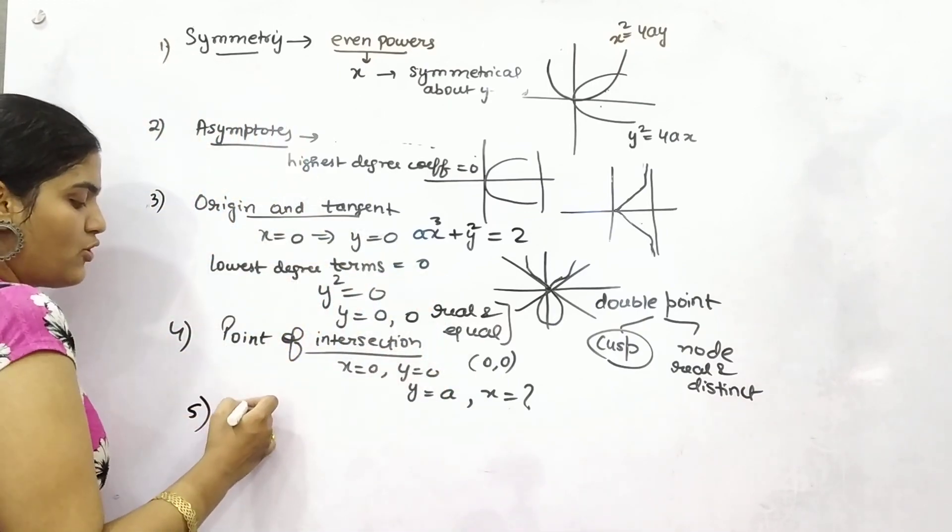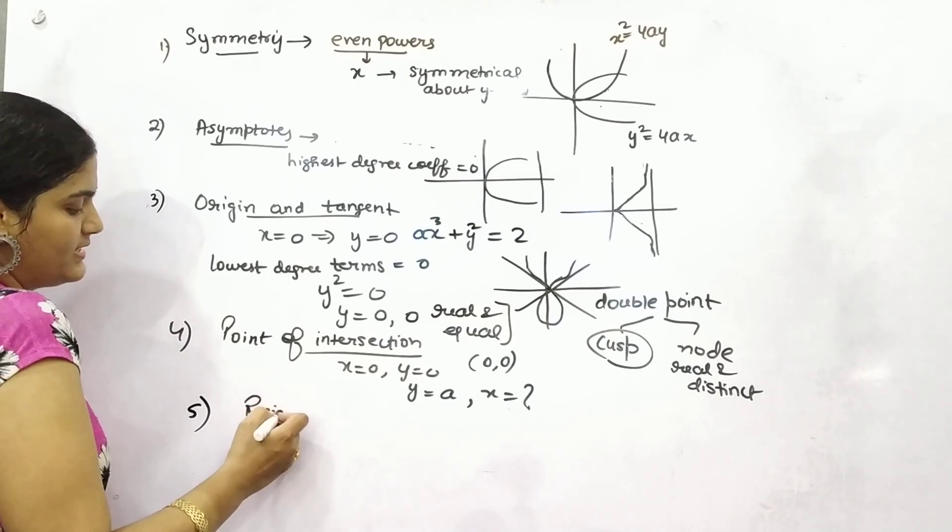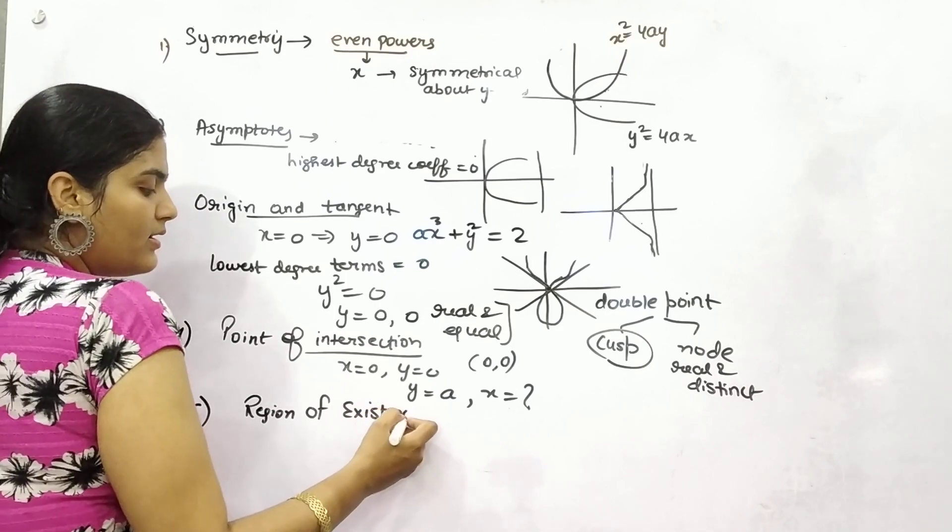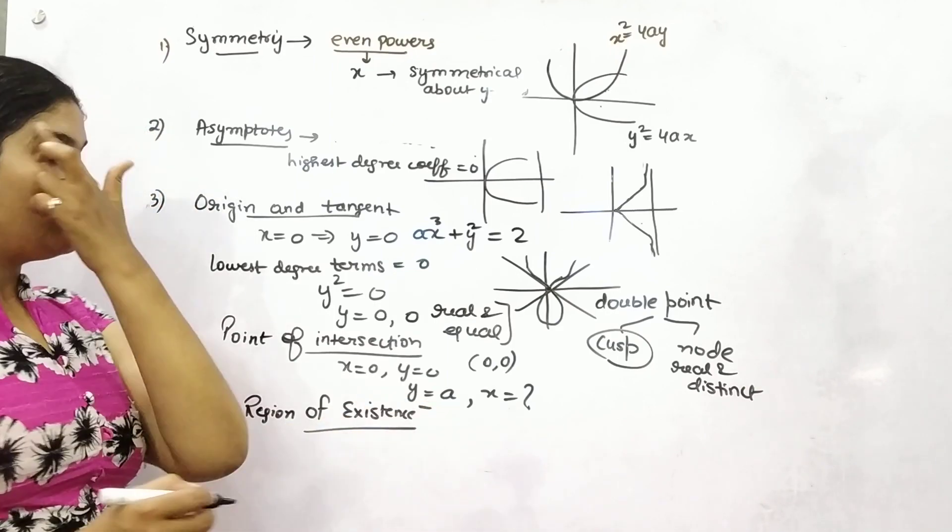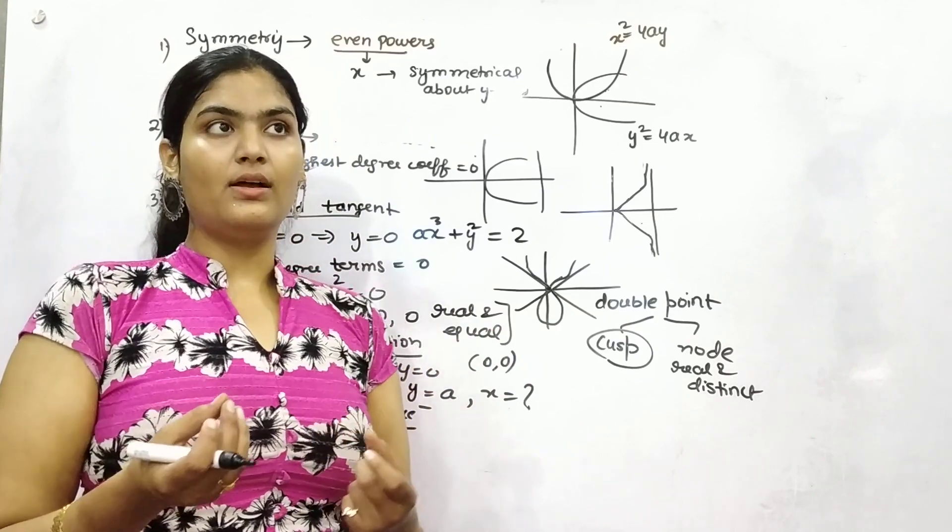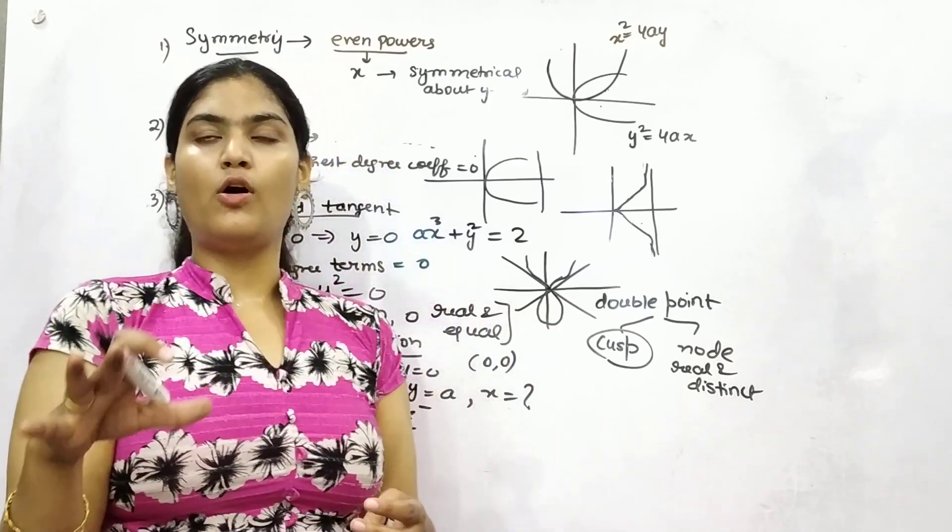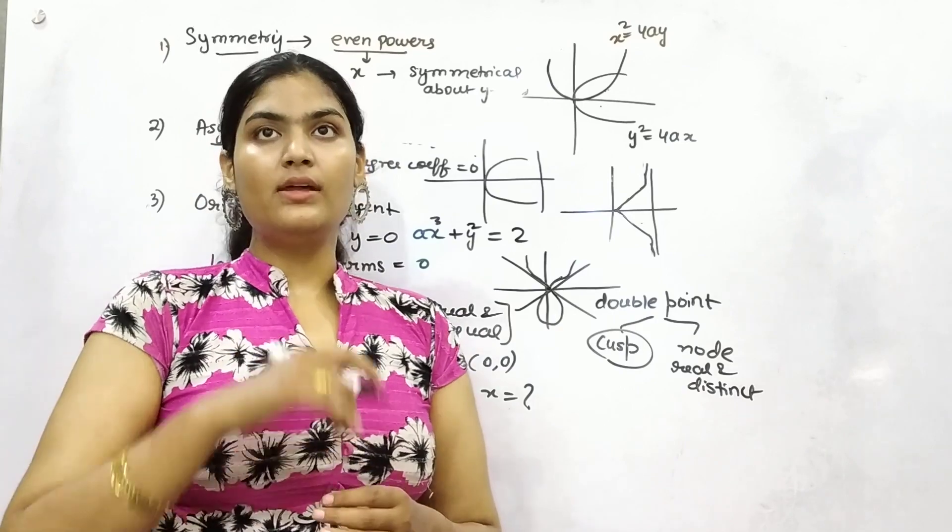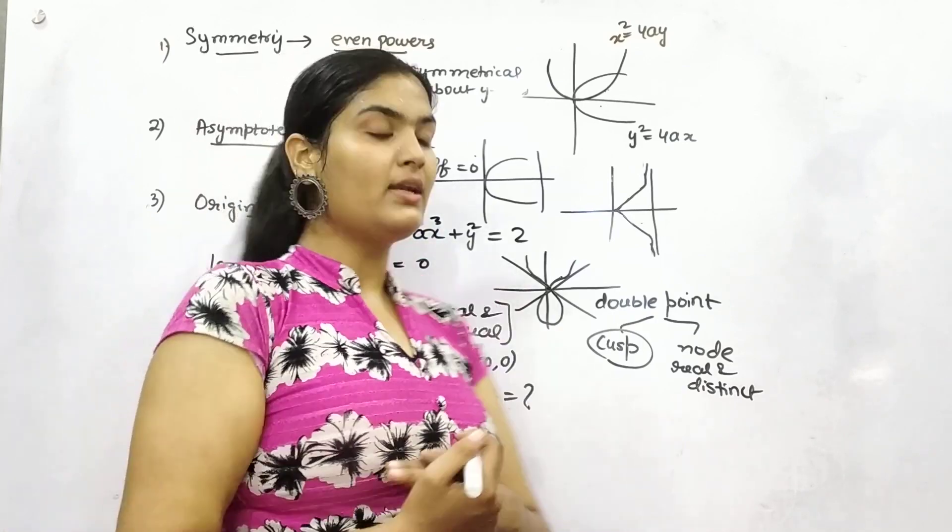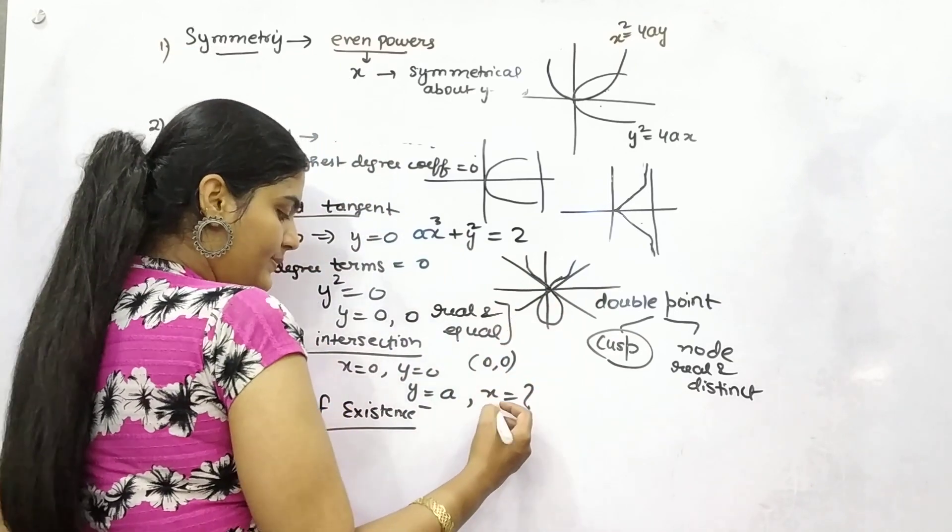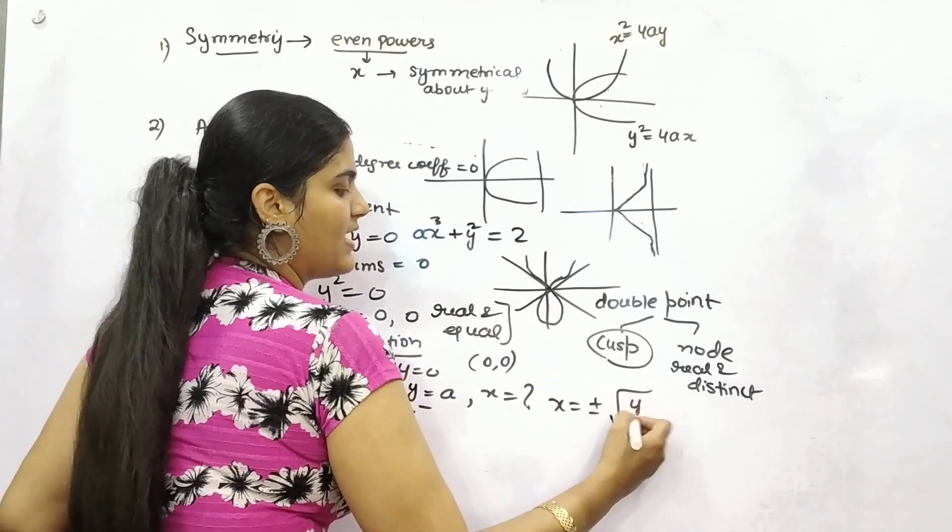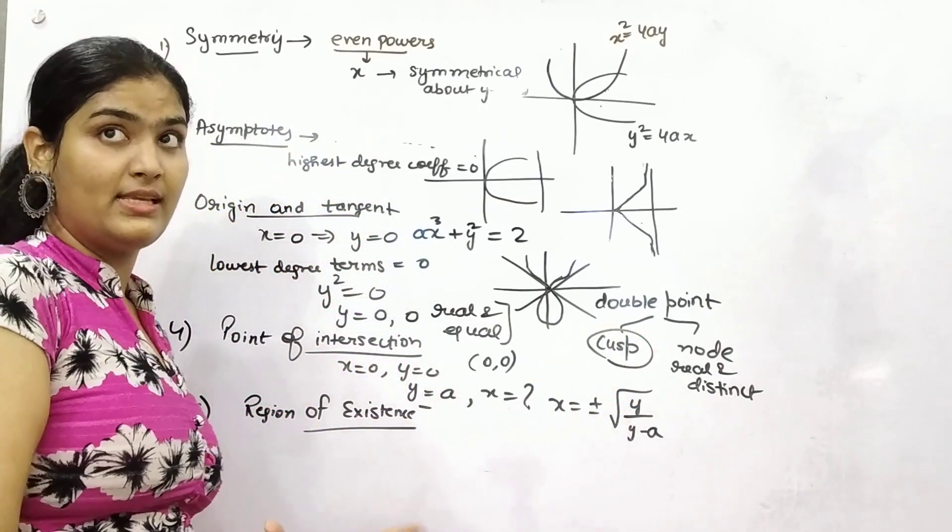Last but not least, your region of existence. Do you remember the concept of domain and range? Whenever you are given any polynomial, any root form, you need to check whether it is having real value or not. For example, you have x = ±√(y/(y-a)).